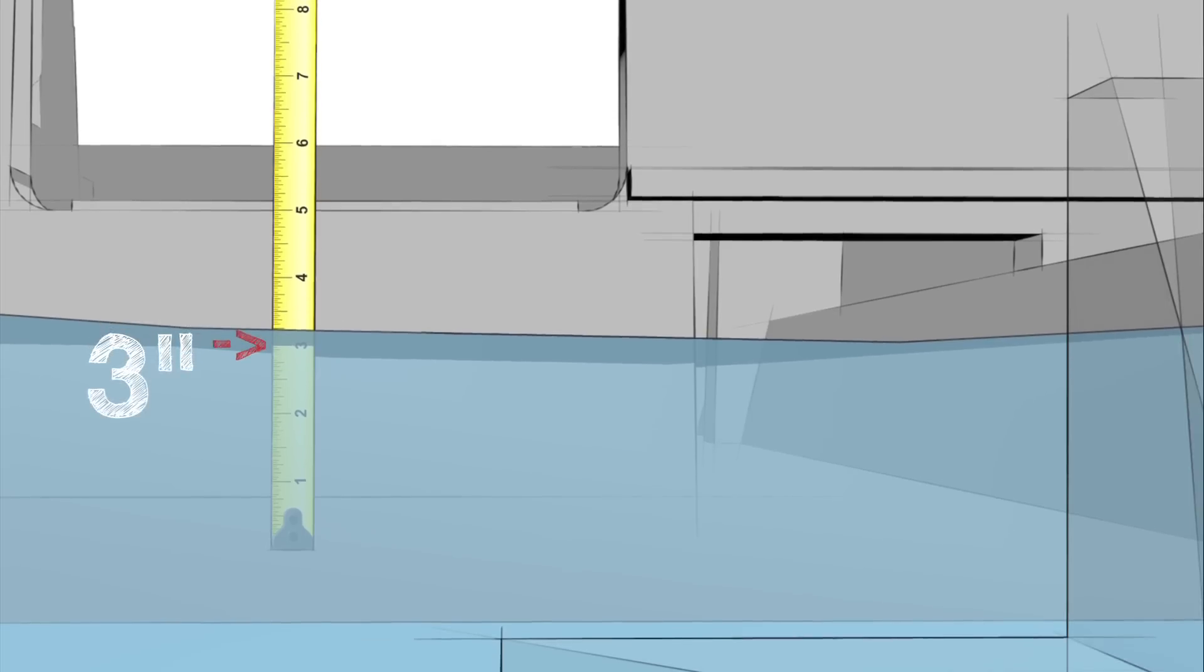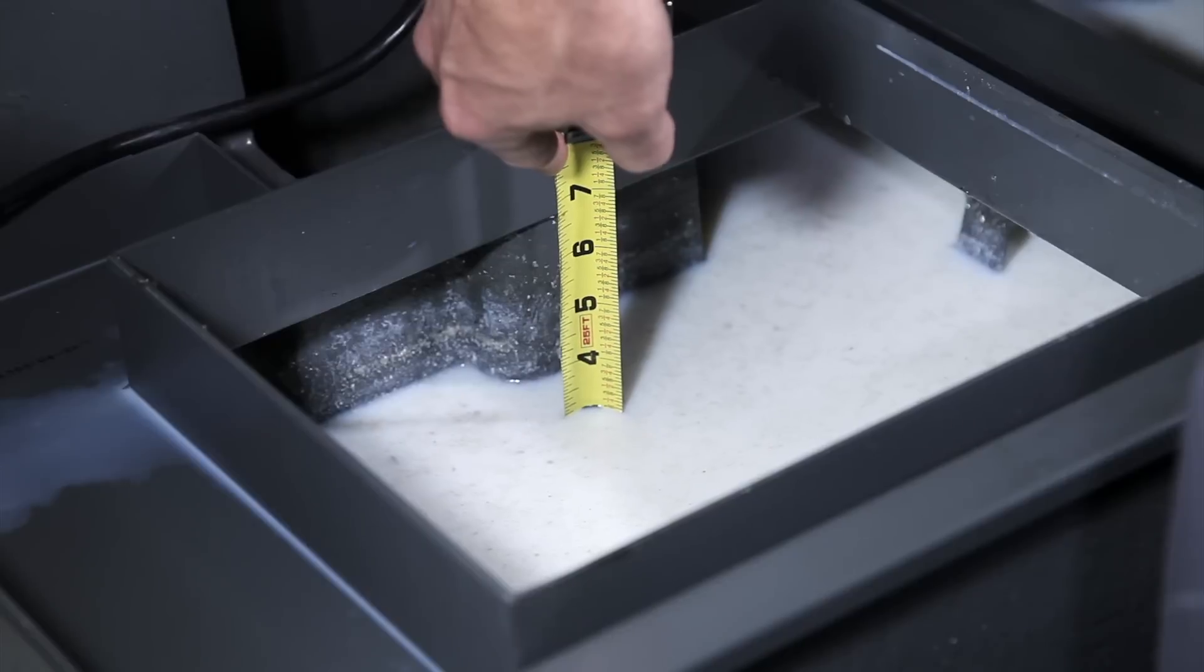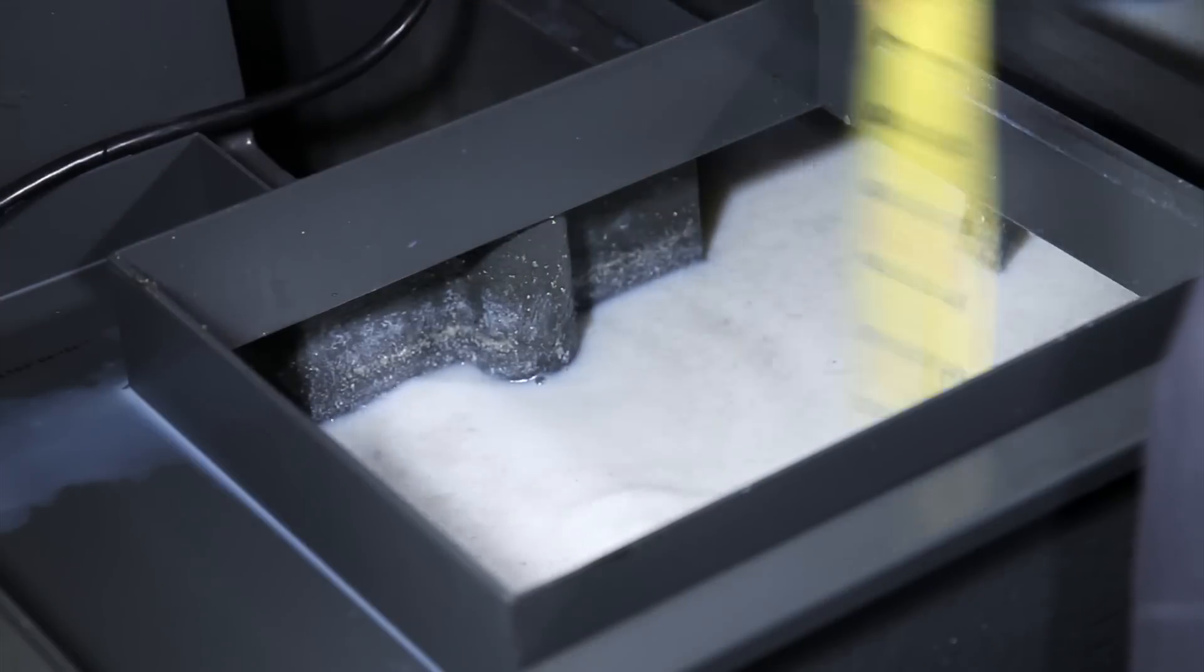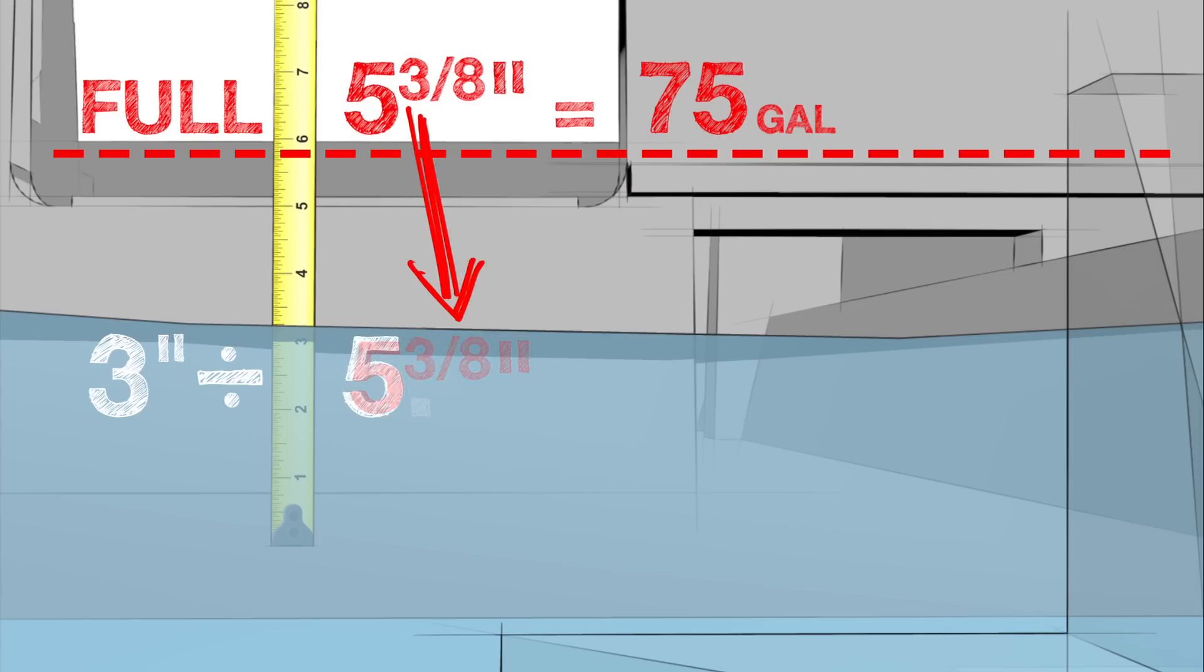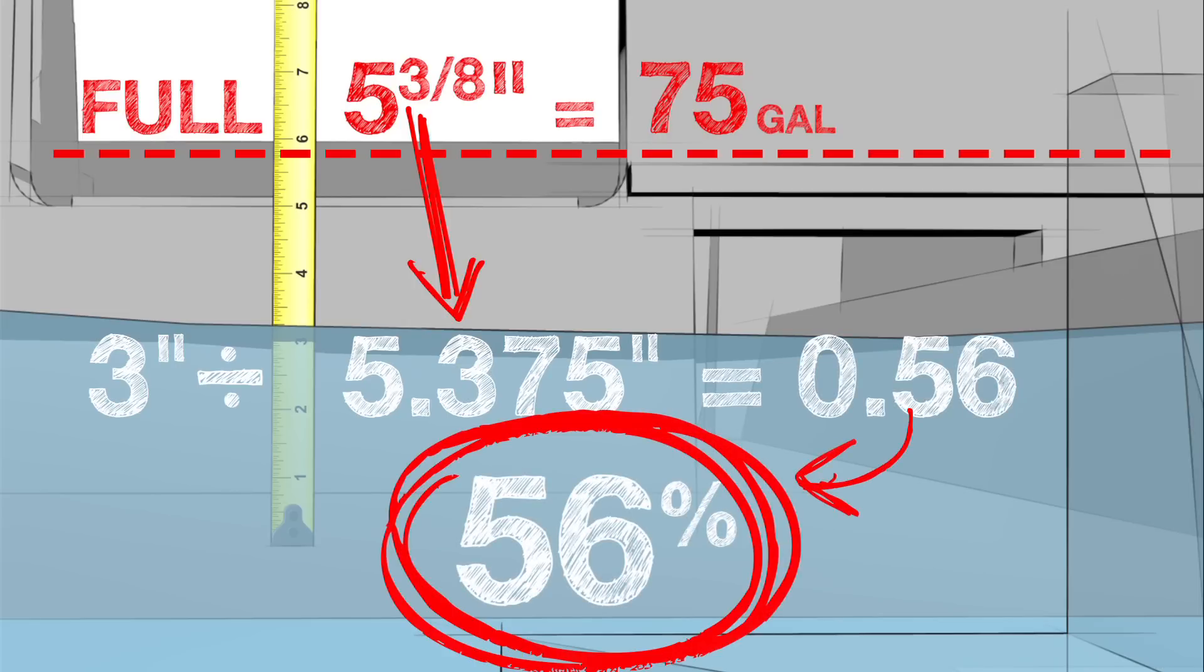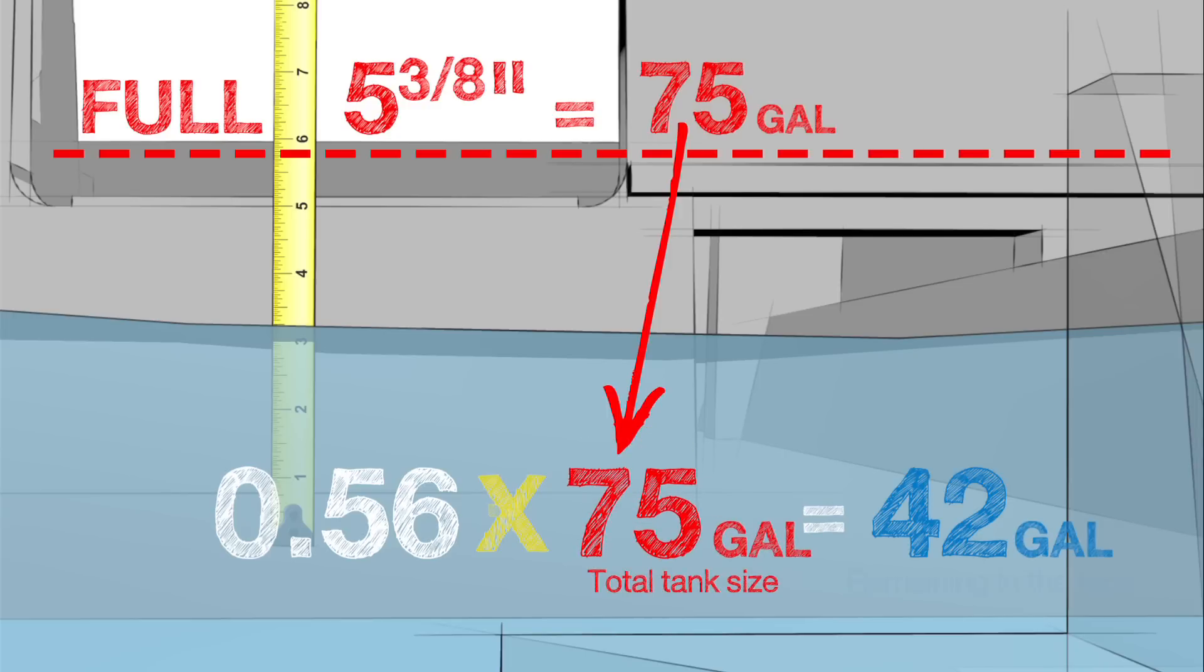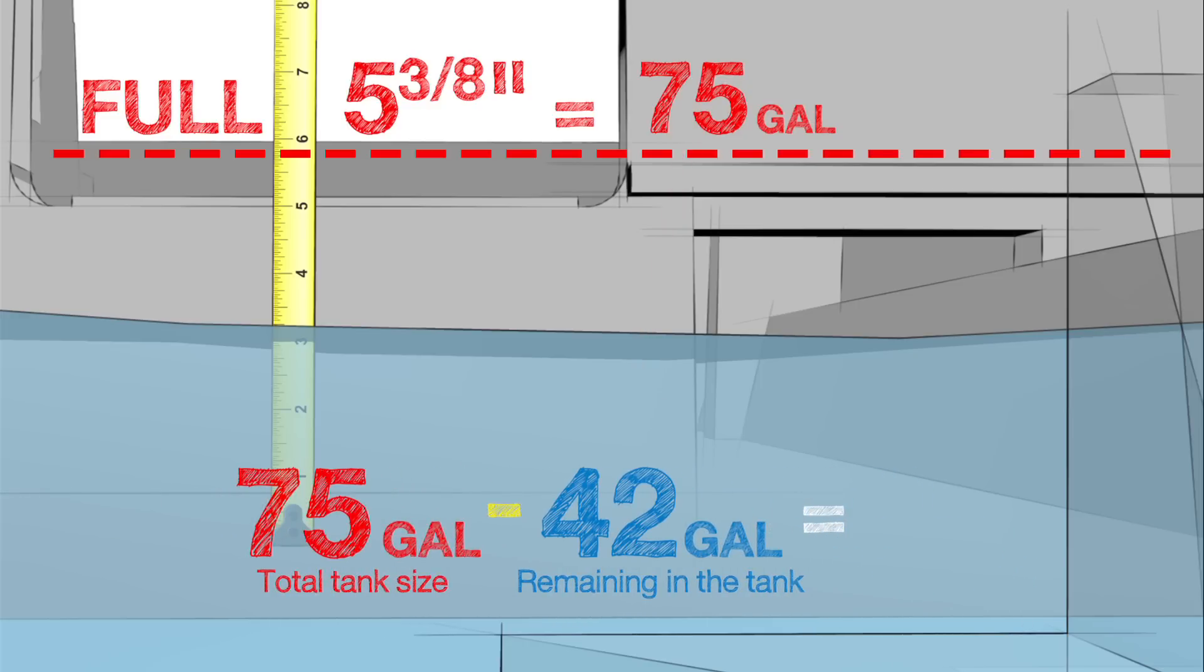When this integral 75 gallon tank is full, the coolant level reaches five and three eighths inches. We divide our measurement of three inches by the five point three seven five inch tank full value. This equals point five six, so this means fifty six percent of the coolant remains in the tank. Multiplying the point five six value times our 75 gallon tank size equals 42 gallons remaining in the tank. We subtract 42 gallons from our total tank size of 75 gallons, leaving us with 33 gallons that need to be made up.